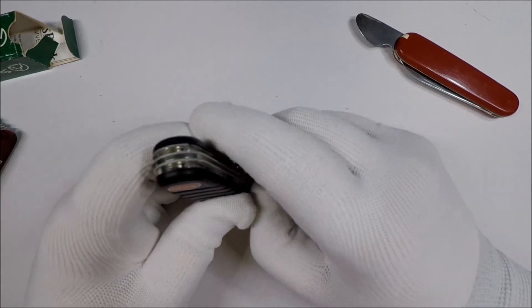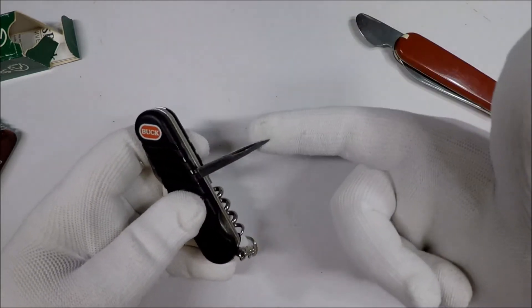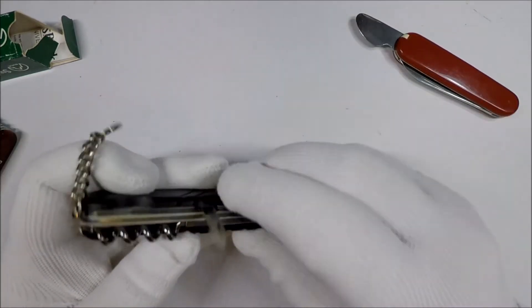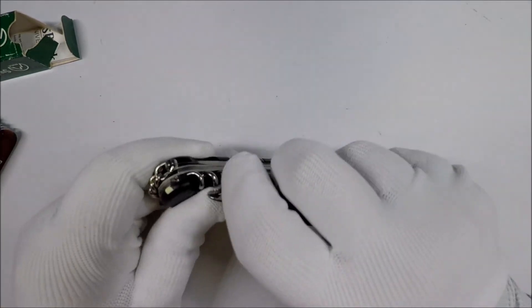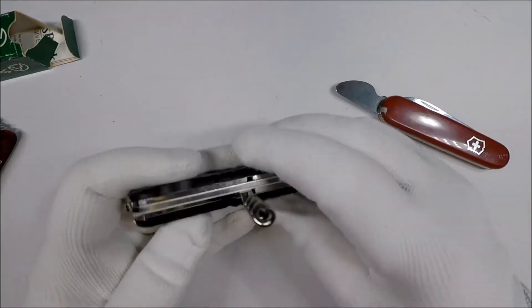On the back, you've got the awl, which is a Winger-style awl, and you've got the corkscrew.